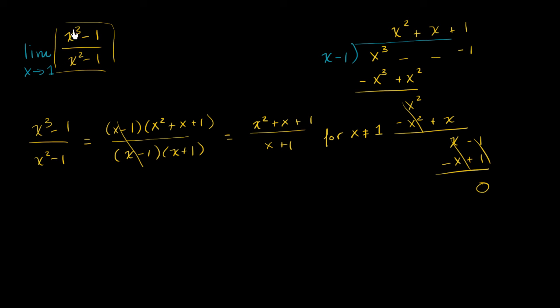And that's completely fine because we're not evaluating as x equals 1. We're evaluating as x approaches 1. So this is going to be the same thing as the limit as x approaches 1 of x squared plus x plus 1 over x plus 1.